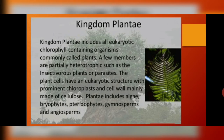Let us briefly discuss kingdom plantae, as we will cover it in detail in a separate chapter. Kingdom plantae includes all eukaryotic, photosynthetic, chlorophyll-containing organisms called plants. A few members are partially heterotrophic, such as insectivorous plants and parasites. Plant cells have a eukaryotic structure with prominent chloroplasts and a proper cellulosic cell wall. Kingdom plantae includes algae, bryophytes, pteridophytes, gymnosperms, and angiosperms.